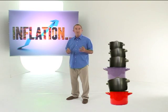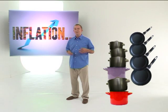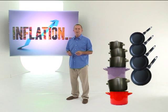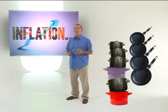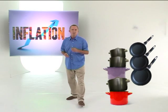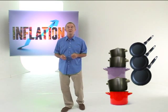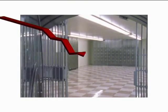For example, if I borrow a thousand rand from you today to buy pots and pans and promise to pay it back in a year's time, I'll be able to buy say six pots and four pans. But when I repay you, the price of pots and pans will have gone up and you may only be able to buy five pots and three pans. This redistribution effect has important economic consequences.